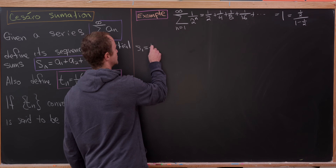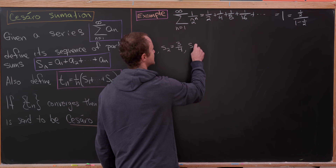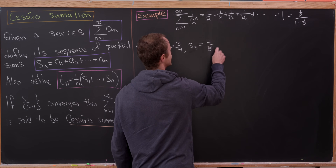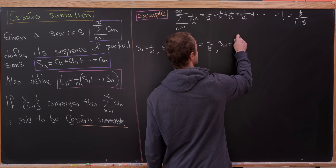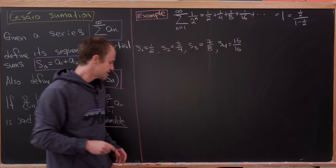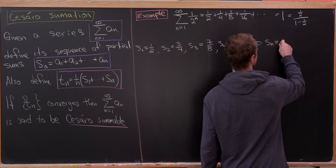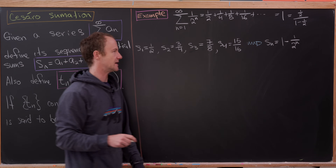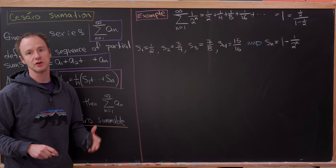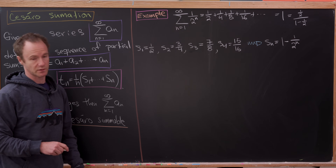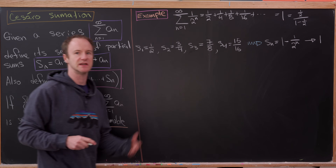S1 is equal to 1/2. S2 is equal to 1/2 plus 1/4, which is 3/4. S3 is equal to 1/2 plus 1/4 plus 1/8, which is 7/8. And S4 is the first three terms — 7/8 plus 1/16 — so that's 15/16. You can prove this by induction: the nth partial sum is equal to 1 minus 1 over 2 to the n. If we take the limit as n goes to infinity, we get 1 because 1 over 2 to the n tends towards 0.